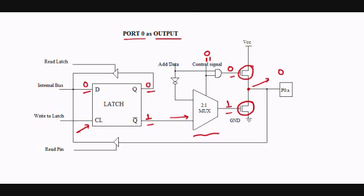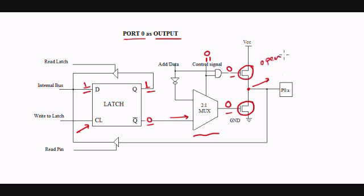Now we will see how to output 1. I will write 1 — because I want to output 1 — and I will get 1 here. This is the complement, I get 0. The control signal is again 0, so the MUX allows this signal to pass through, and I get 0 here. As my control signal is 0, I get 0 here. Now both FETs are open switches. If I go and measure the value at this point, it is going to be at high impedance state, because the point is neither connected to VCC nor connected to ground. We get into a third state, which is called high impedance state.